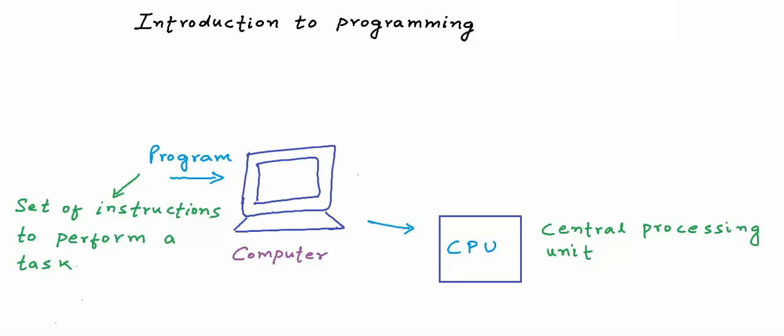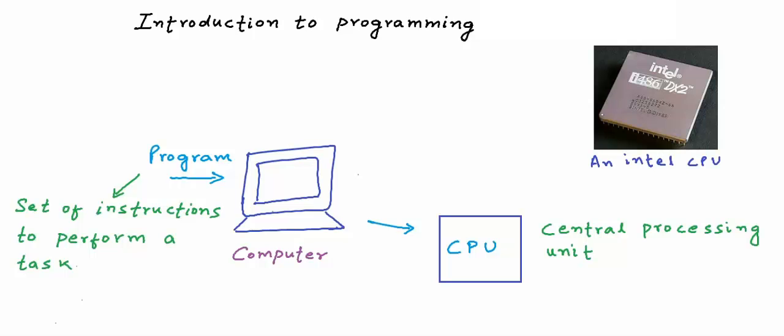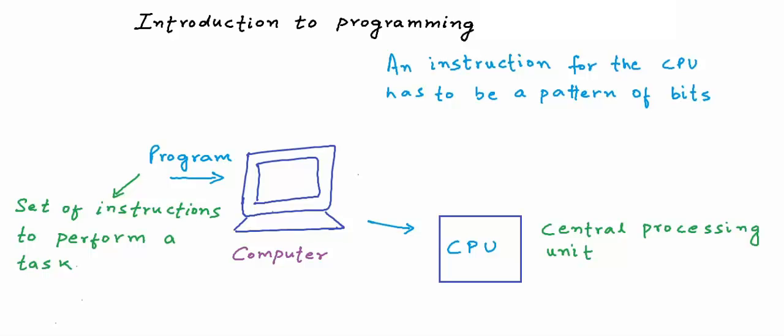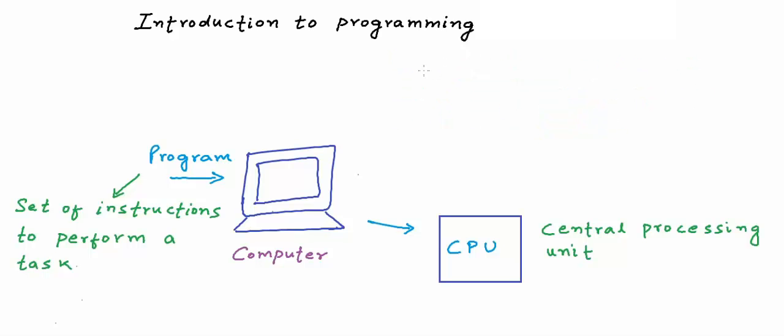Sometimes we simply call it the processor, and it's not the big case or box of your desktop computer — it's often misunderstood like that. A modern day CPU is a very small integrated circuit. Intel is one of the companies that makes CPUs. CPU is the one that has to execute your instructions. Each instruction to the CPU has to be a pattern of bits — a pattern of ones and zeros. But an instruction cannot be any random pattern of bits. It has to be in a certain format so that the CPU is able to decode and execute it. A set of specifications are laid out for a CPU and your instructions must follow those specifications. For example, a specification can be that any instruction to perform an arithmetical or logical operation must be in 20 bits.